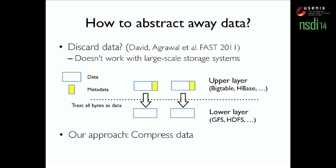The simplest approach is to discard data completely. This approach is used in a previous work called David, developed at Wisconsin, which successfully applied this idea to evaluate local file systems on future devices such as very large solid-state disks. But one quickly finds that this approach doesn't work well with large-scale storage systems, mainly because these systems usually have multiple layers. For example, Bigtable stores its own data on Google's file system, and so do HBase and HDFS.